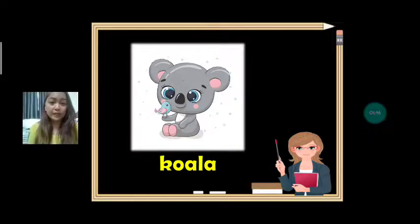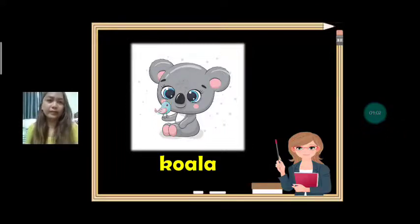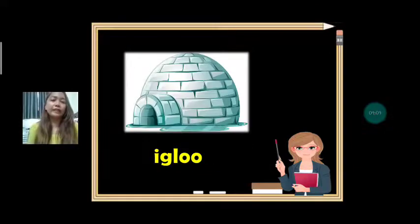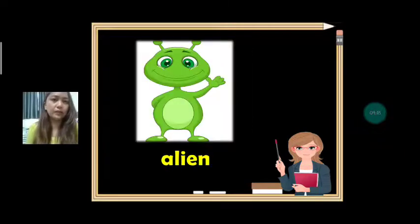Next vocabulary is quala. What article — A or AN? It's A. What is it? It's a quala. Next we have igloo. Igloo starts with letter I. What article are we going to use? AN. What is it? It's an igloo.